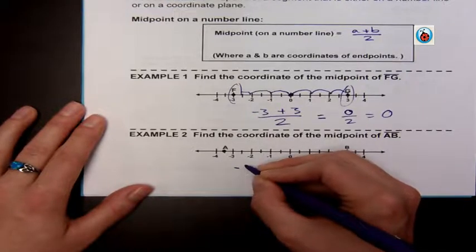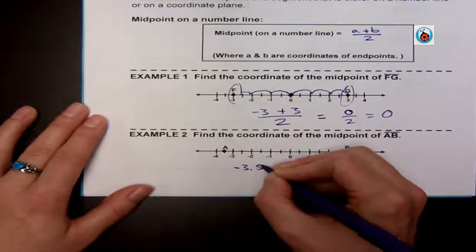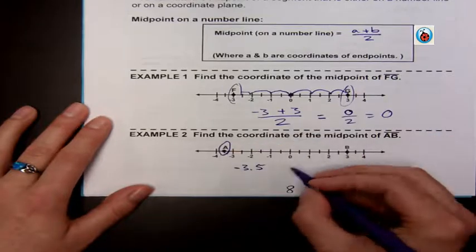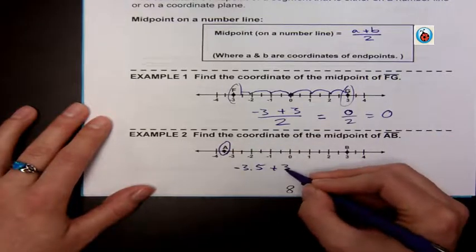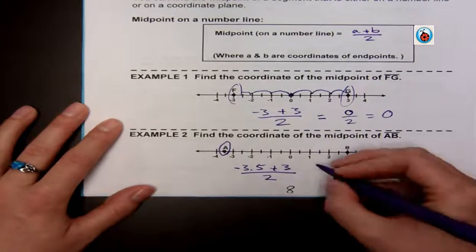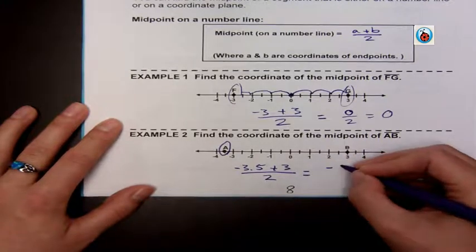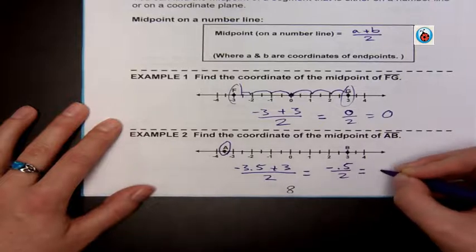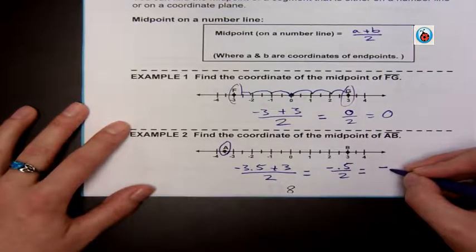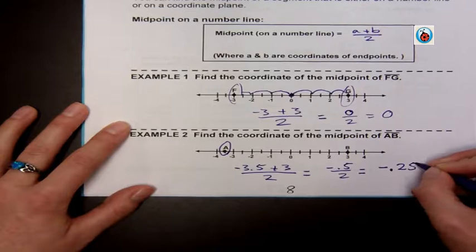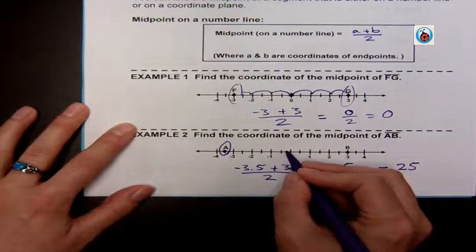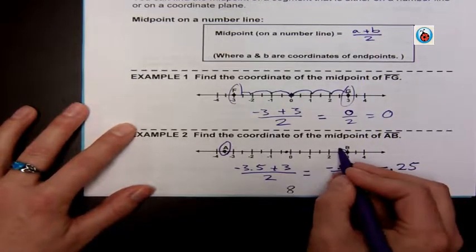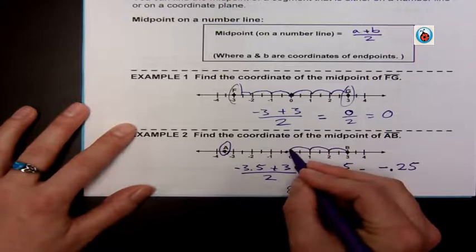This next one has a decimal, so it's not quite so easy. We have negative 3.5 plus 3 divided by 2, and that gives us negative 0.5 divided by 2, which gives us negative 0.25. So negative one-quarter is going to be right about here, and I'm going to check: that's one, two, three and a quarter this way, one, two, three and a quarter that way. It checks.